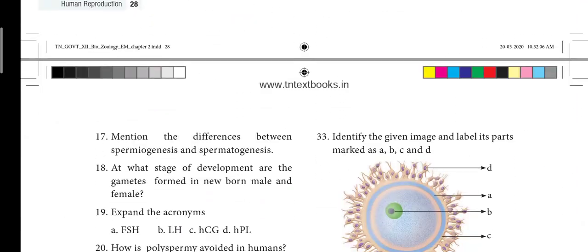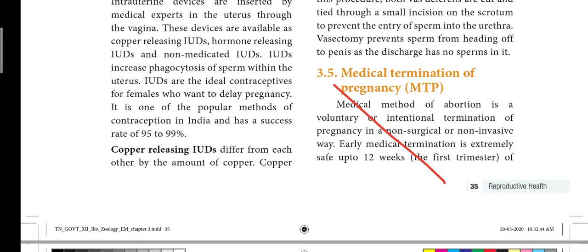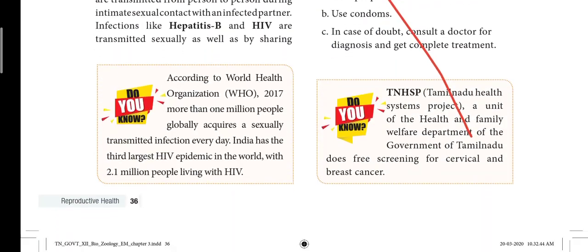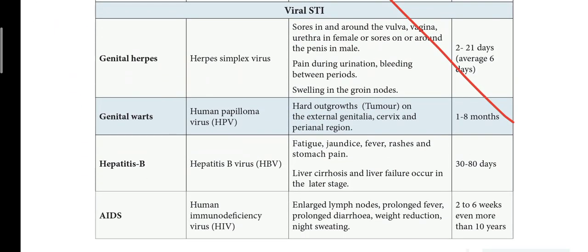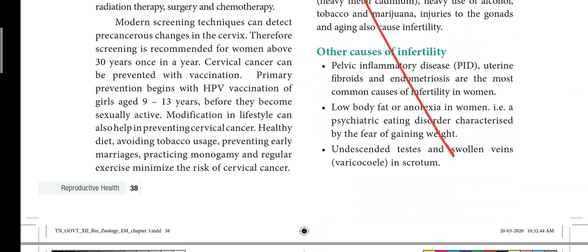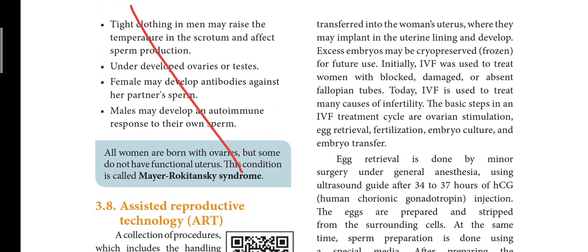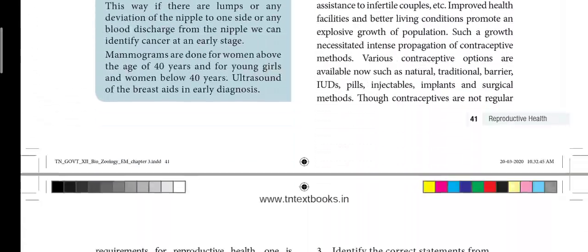Next is the third lesson, starting at page number 35. Heading: Medical Termination of Pregnancy, MTP — that heading will be struck out. Next, page 36 — that box will be struck out. Page 38 will be struck out. On page 39, there are 4 points — those points will be struck out. This third lesson is reduced from the syllabus.